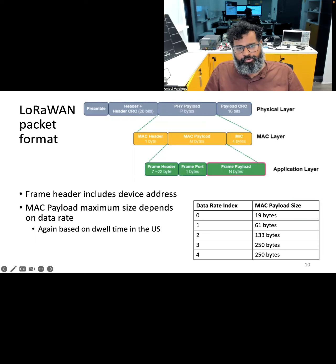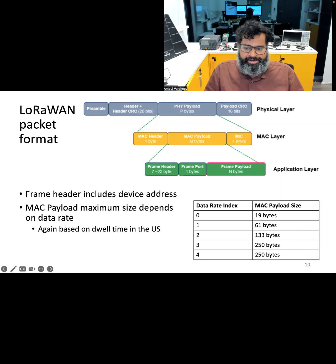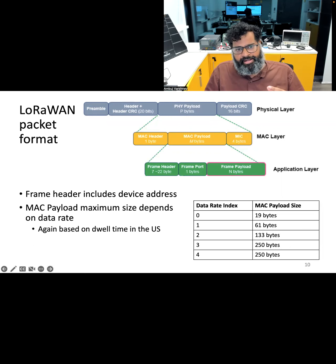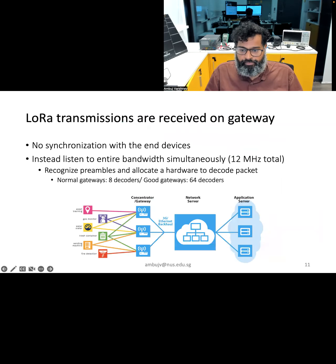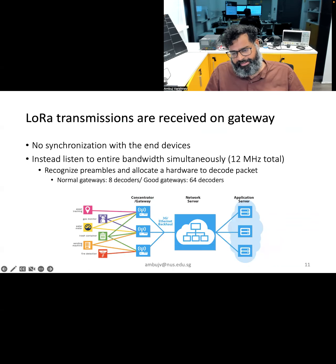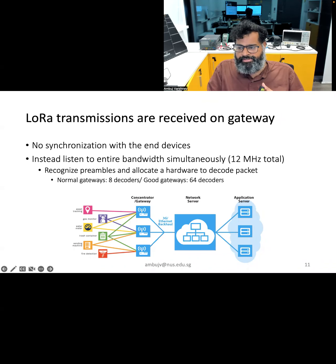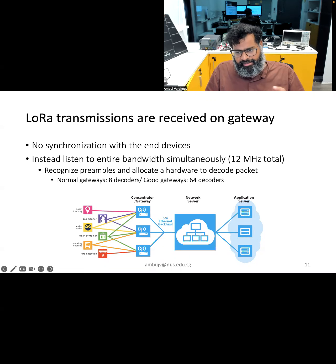The maximum data payload in the LoRaWAN packet structure depends upon the data rate being used — it is not fixed across the protocol. Regarding network topology, LoRaWAN is organized such that end devices transmit their data to gateways, which then communicate it to cloud or other servers using a backhaul network. These end devices communicate to gateways that listen to the entire bandwidth simultaneously, which can be 12 megahertz for some parts of the world. Typically, there is no synchronization between the gateways and the end devices.